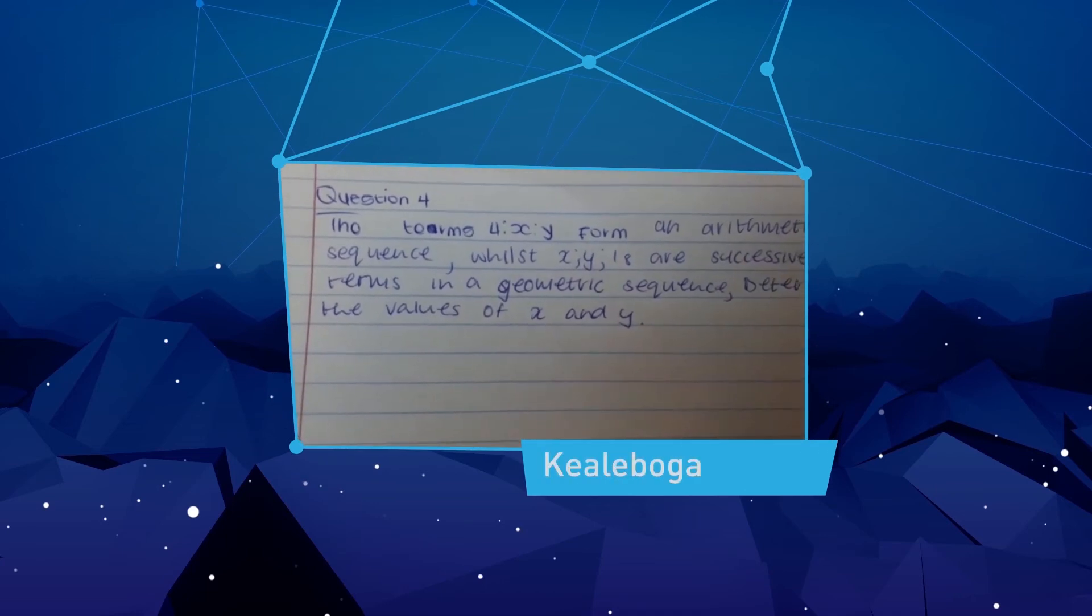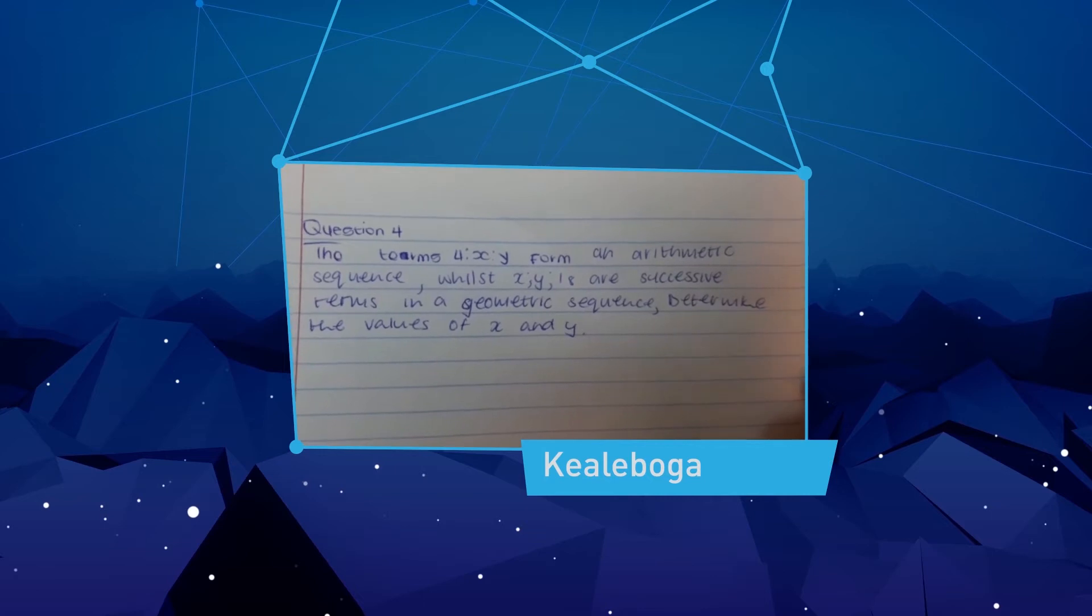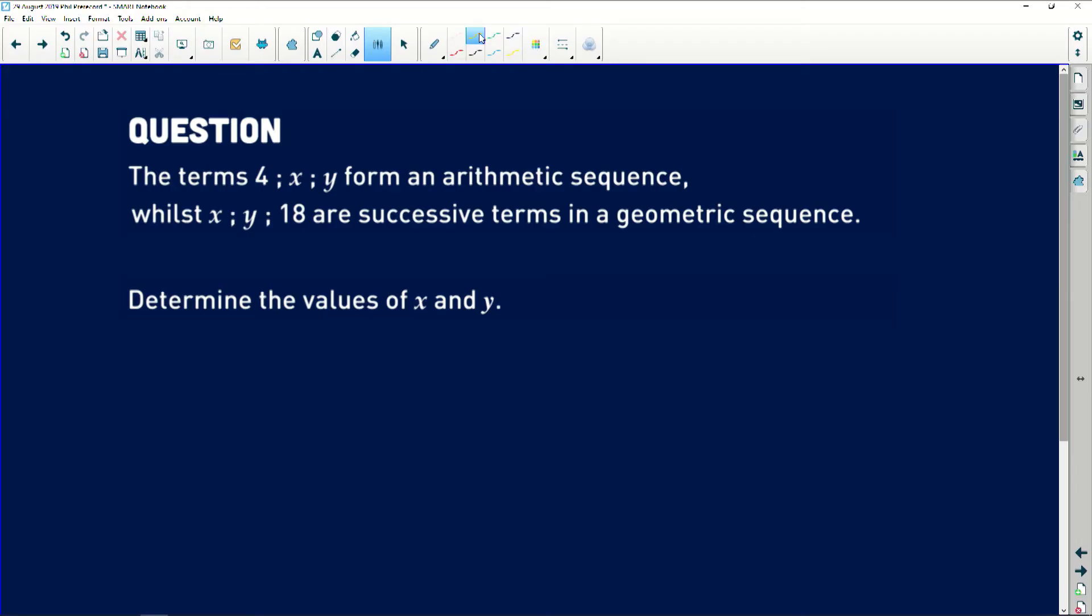Hi TF. My name is Kelo Wachato. Can you please kindly assist me with this question? It says that the terms 4, x, and y form an arithmetic sequence, whilst x, y, and 18 are successive terms in a geometric sequence. Determine the values of x and y.